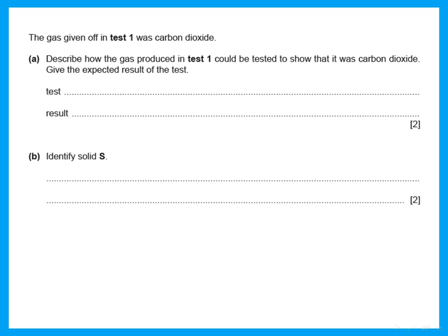So solid S has calcium and carbonate — that means it is calcium carbonate. The gas given off in test one was carbon dioxide. To describe how to test the gas: bubble it through limewater — it turns milky.